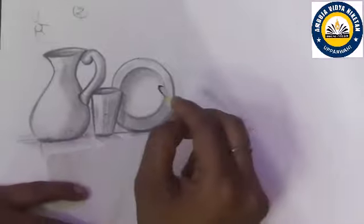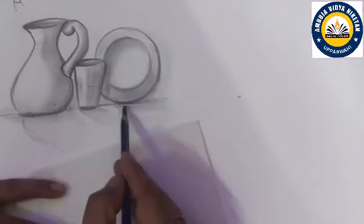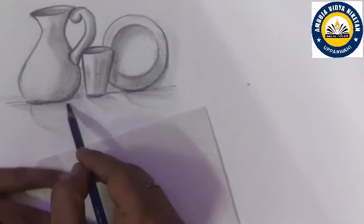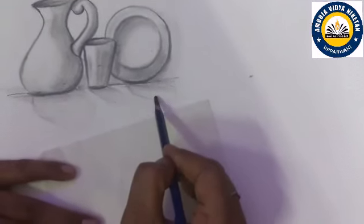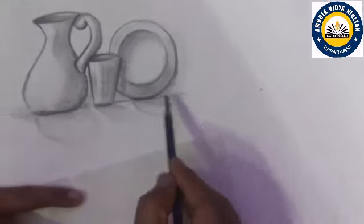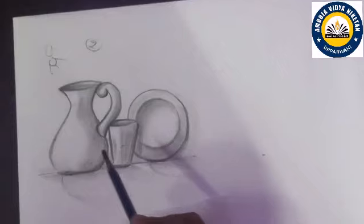Little bit shades. Then finally, final touch up. Light. See that here, shadow of jug, shadow of glass, shadow of plate. According to the shape with opposite direction of light.